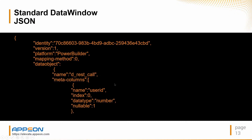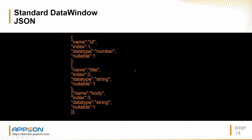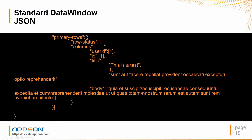In standard DataWindow JSON data, you can see the DataWindow reference, information about the columns, your primary row with row status and column values. In this update example, the user ID wasn't changed, so just the one value is sent. But the title was changed, so in standard DataWindow JSON there's the original value and the new value, plus the column status information.